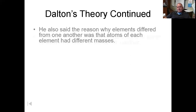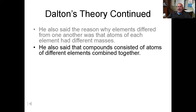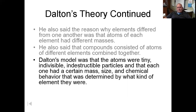Furthermore, what made different elements different was that they had different masses. He said that a compound happened whenever atoms of different elements would bind together in specific ratios — you might have two of this atom and one of that atom, or three of this and two of that. The ratio of the different elements would determine what compound you had.